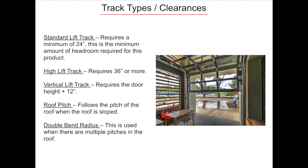When you have 24 to 36 inches of headroom, a standard lift track will be used. If there is more than 36 inches of headroom, you would then specify a high lift track. If you have the space and want the door to open vertically up the wall, you would specify a vertical lift track, which requires a headroom measurement of the door height plus 12 inches. The next type of track is a roof pitch track, used when the ceiling pitches upward. No overhead sectional door can work on a ceiling that slopes downward. The last type is a double bend radius, used when there are multiple pitches in the roof.